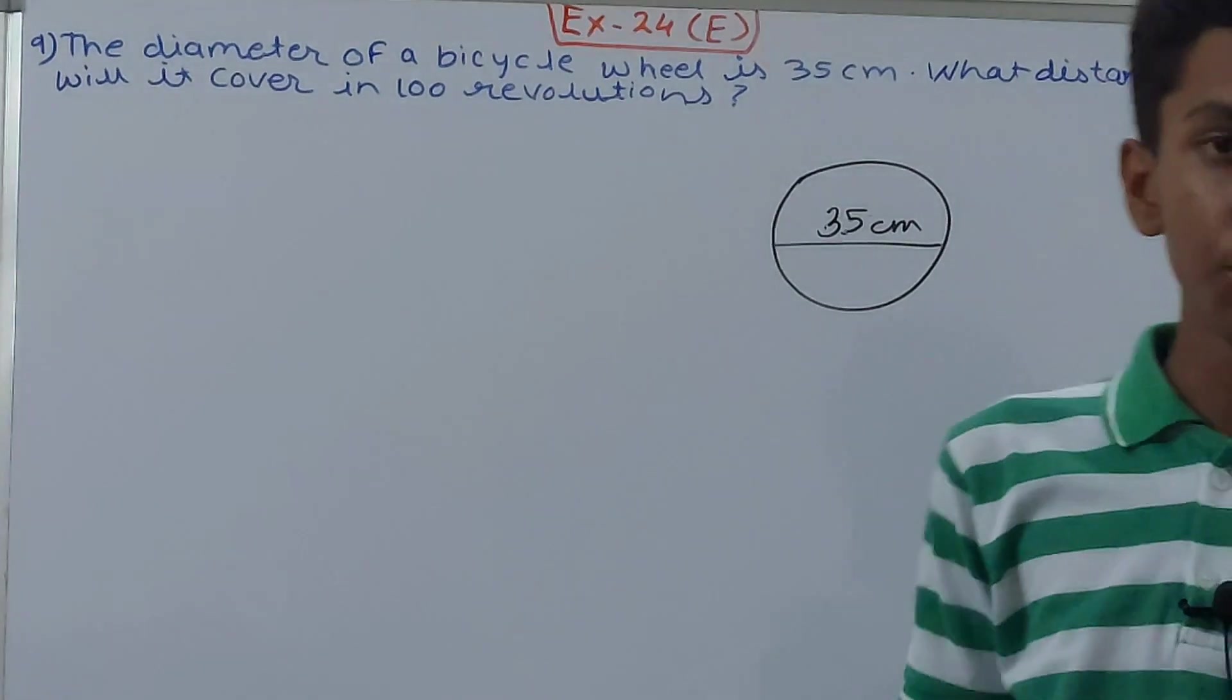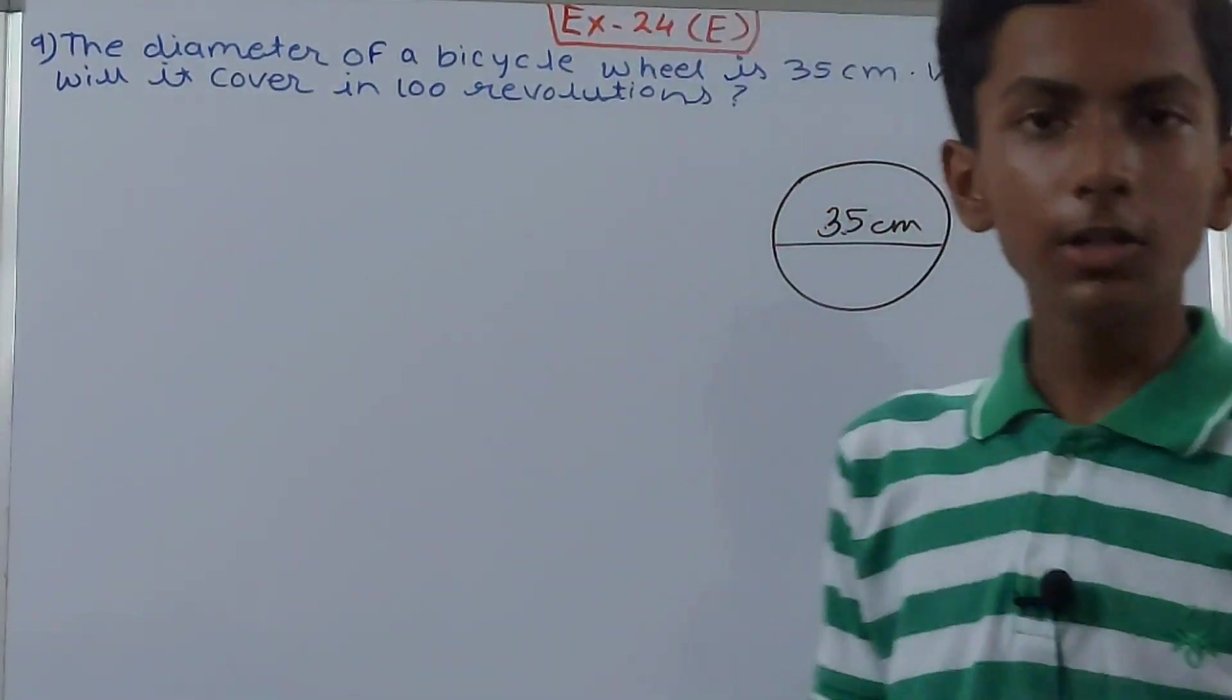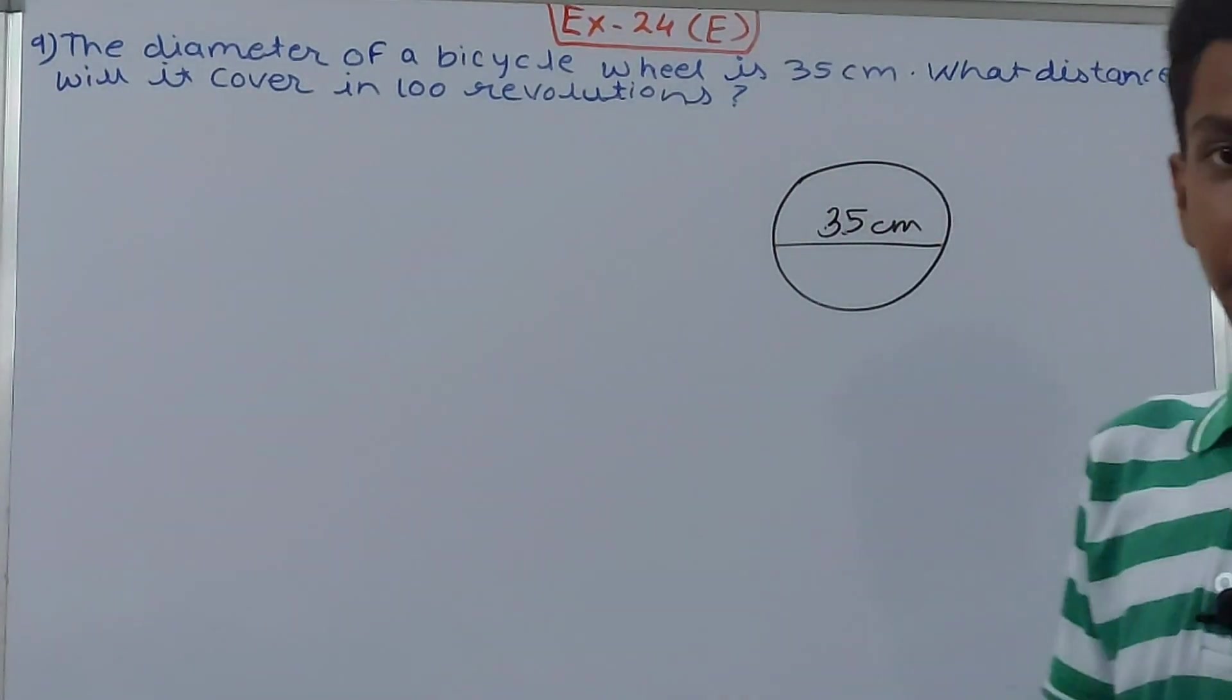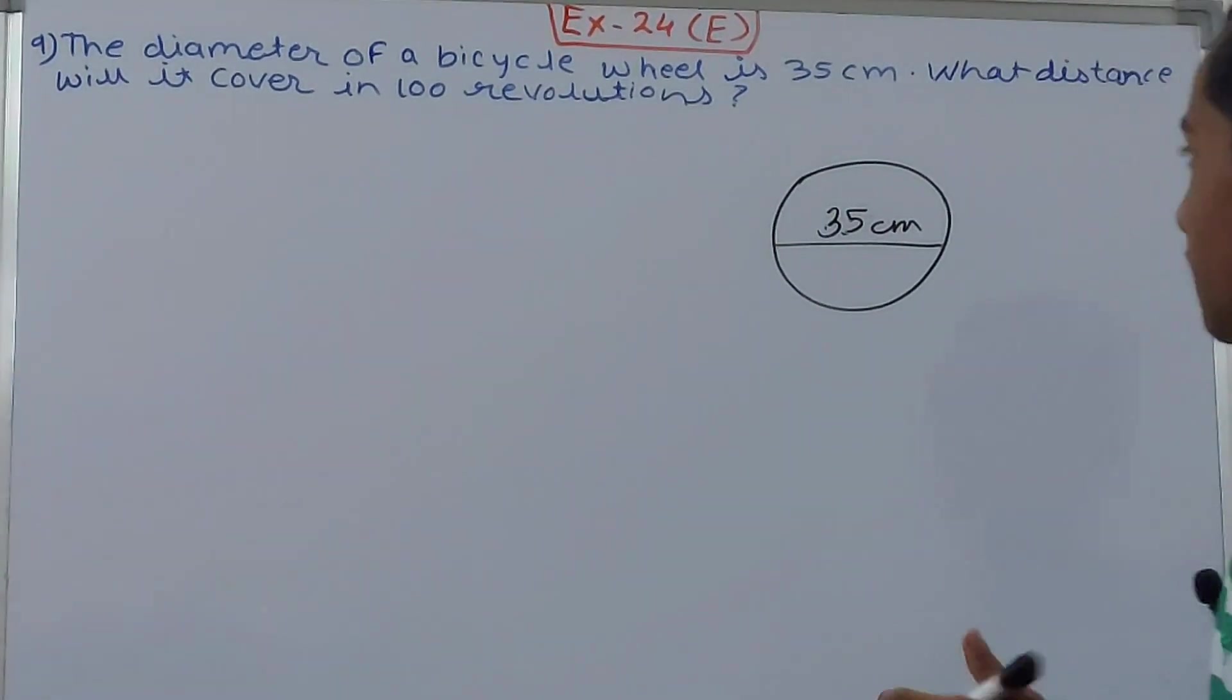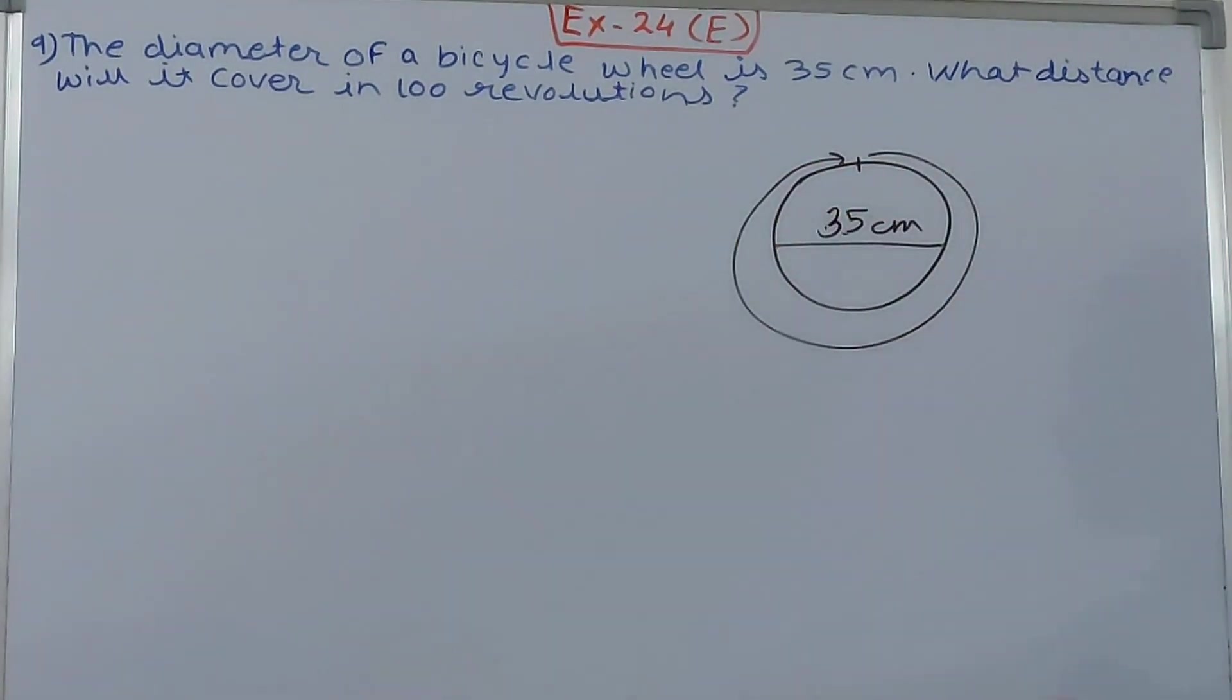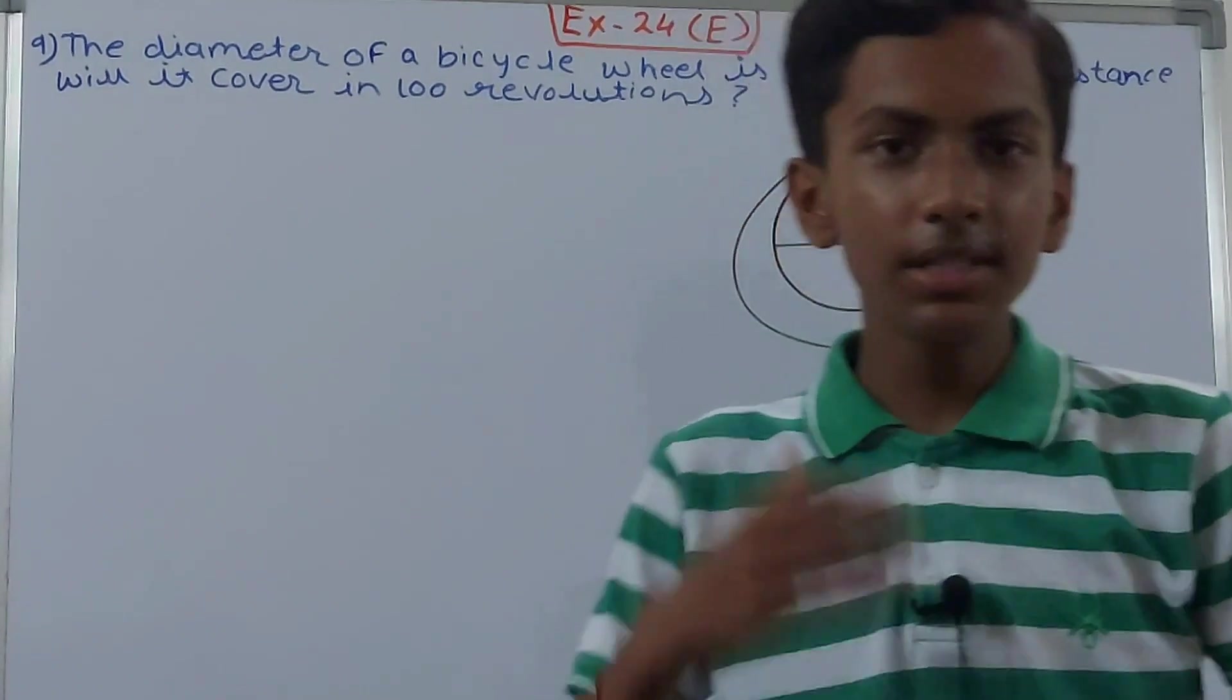100 revolutions means the wheel will roll 100 times. It will spin 100 times from here to here, all the way back to here like this, 100 times. So that means it